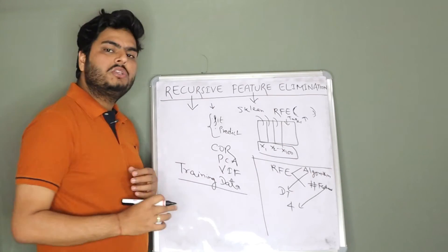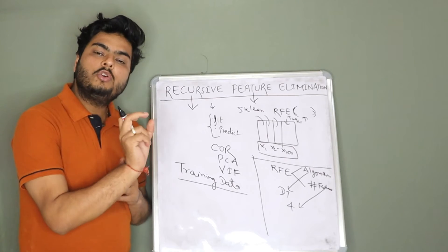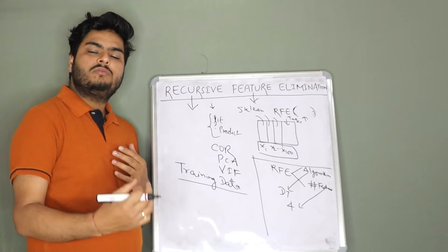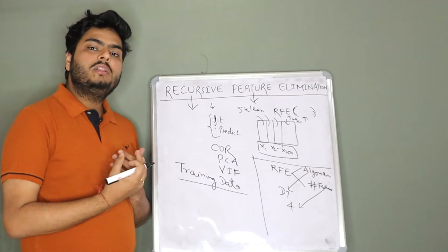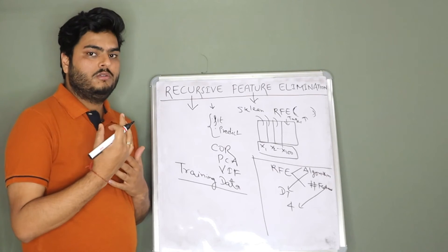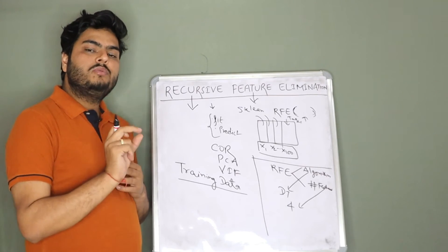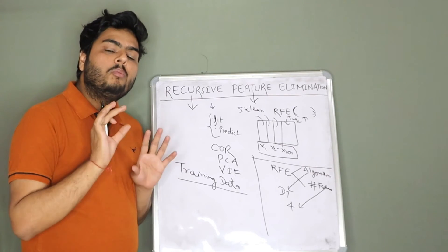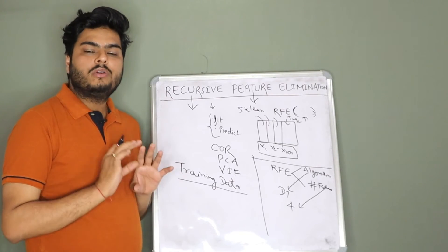If you fit a linear regression model then what happens, you have the coefficients. Some of the coefficients will be larger, some of the coefficients will be smaller. Obviously, the larger coefficients are more important which means the coefficient which is large, the variable associated with that coefficient is more important.